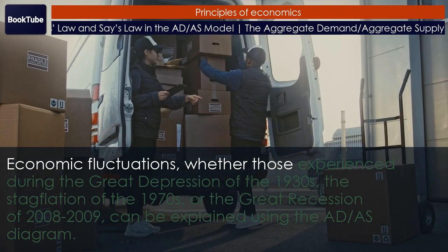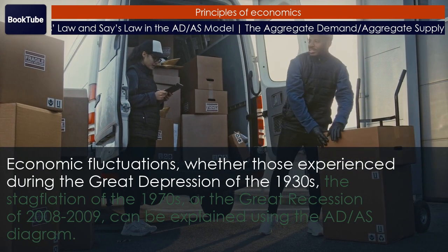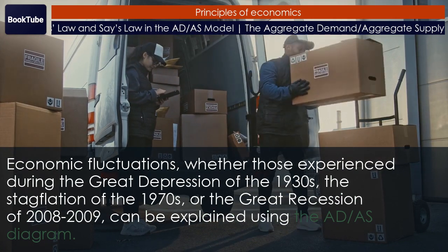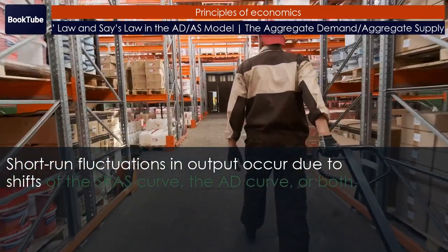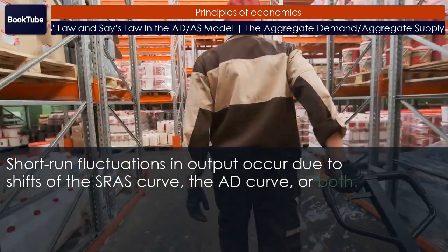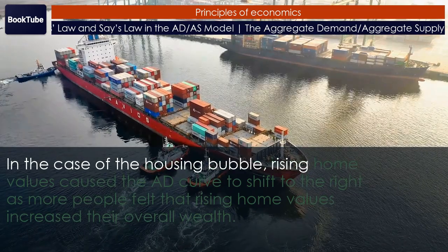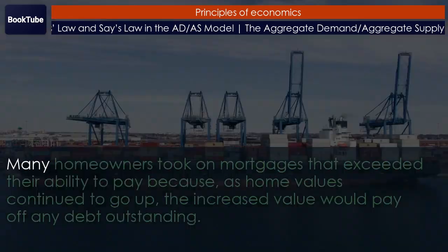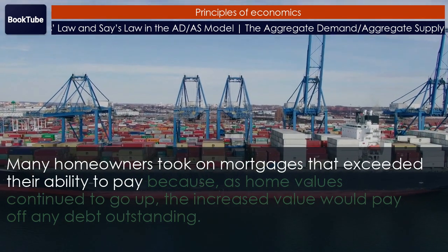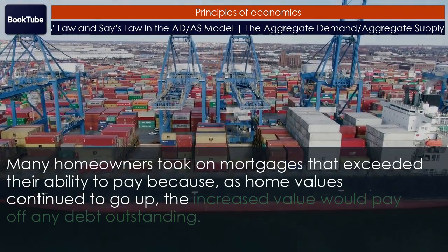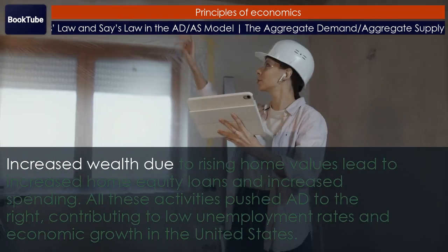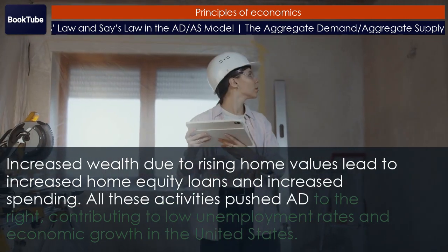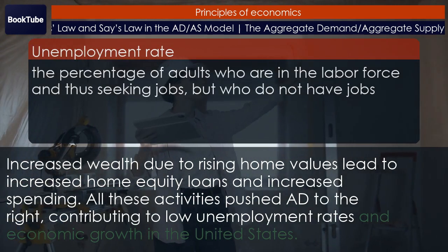Economic fluctuations — whether those experienced during the Great Depression of the 1930s, the stagflation of the 1970s, or the Great Recession of 2008–2009 — can be explained using the AD/AS diagram. Short-run fluctuations in output occur due to shifts of the SRAS curve, the AD curve, or both. In the case of the housing bubble, rising home values caused the AD curve to shift to the right as more people felt that rising home values increased their overall wealth. Many homeowners took on mortgages that exceeded their ability to pay because, as home values continued to go up, the increased value would pay off any debt outstanding. Increased wealth due to rising home values led to increased home equity loans and increased spending, pushing AD to the right and contributing to low unemployment rates and economic growth in the United States.